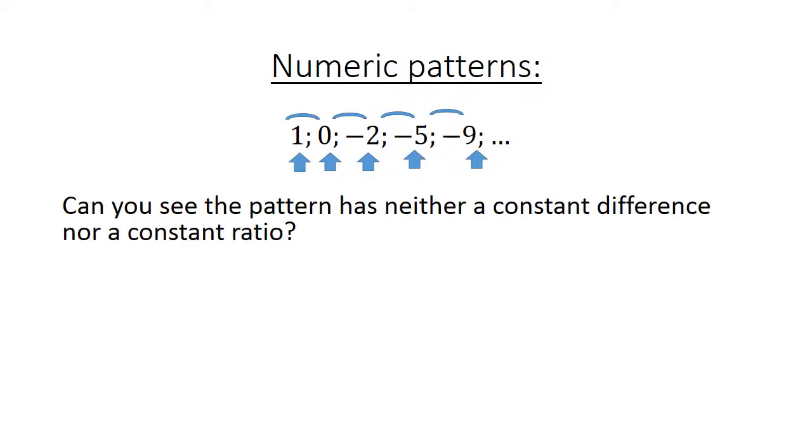Numeric patterns: Let's look at the following pattern 1, 0, -2, -5, -9. If we look at each next number, what happens from the first one to the next one? Can you see the pattern has neither a constant difference nor a constant ratio?